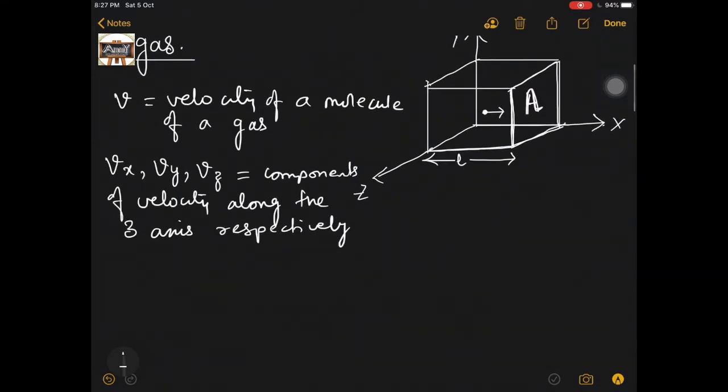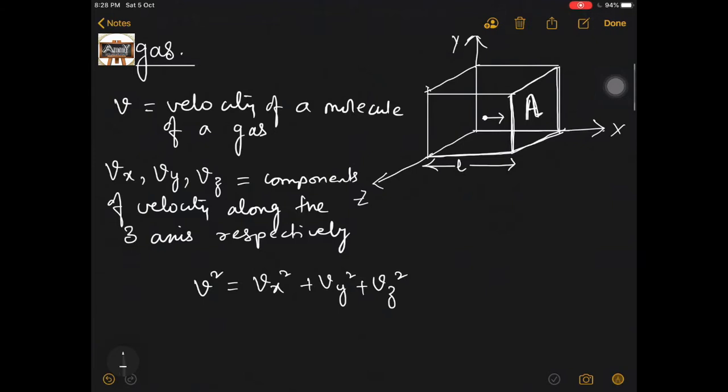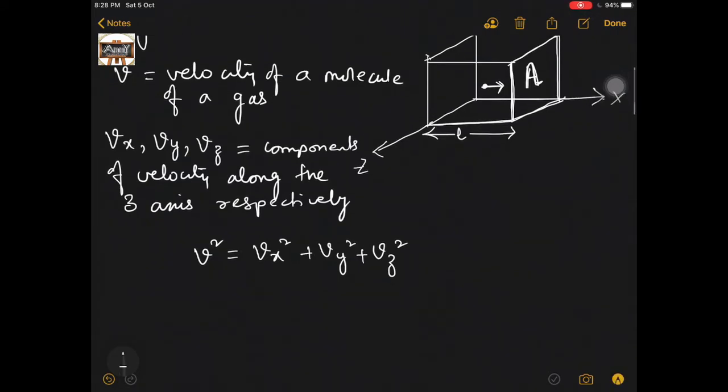If they are the components, I can write this vector equation: V² = Vx² + Vy² + Vz². As you see in this figure, this molecule is heading towards A. So the momentum when it goes and hits the wall A, the momentum imparted is m·Vx, where m is the mass of each molecule of gas.